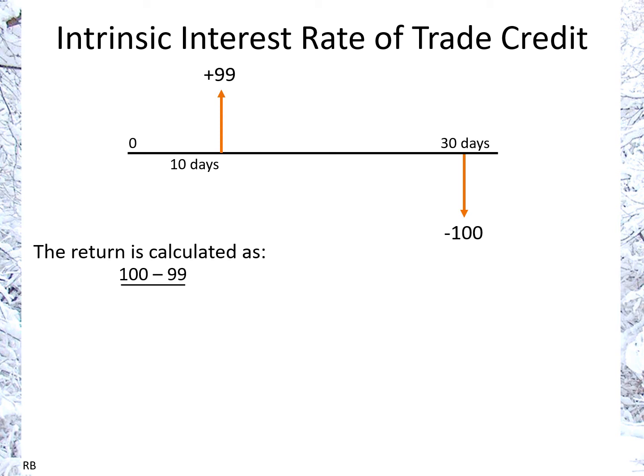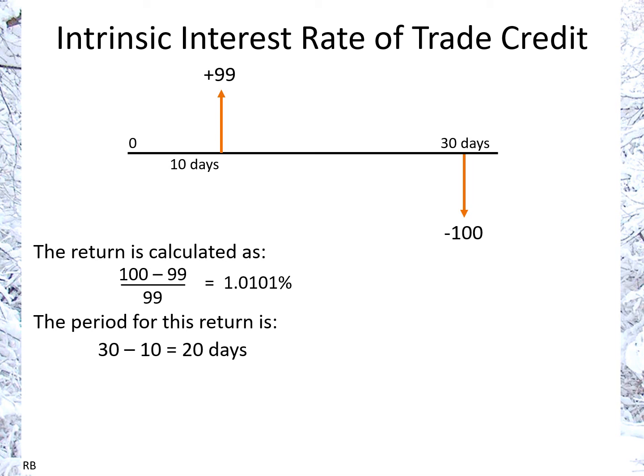The return is simply $1, or 1 divided by 99, which is the initial amount. That gives us 1.0101%. That's the return we are going to get, and the period for that return is 30 minus 10 days, or 20 days — the period over which this return is being financed.